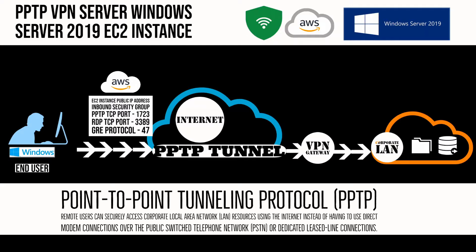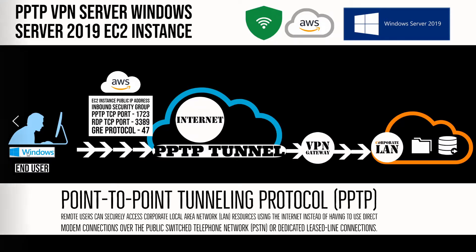Instead of using direct modem connections over the public switched telephone network or dedicated leased line connections. In this figure, we have the remote user creating a VPN connection from his Windows machine. This creates a Point-to-Point Tunnel Protocol tunnel, and using his internet connection, this tunnel goes to the VPN gateway and then to the corporate local area network to access resources such as files and databases.